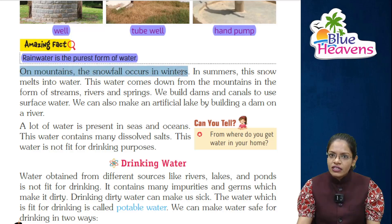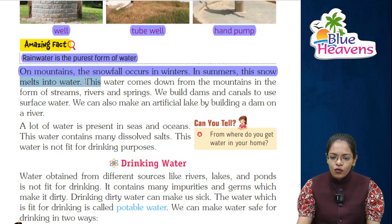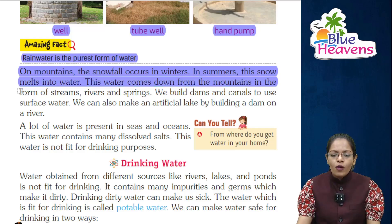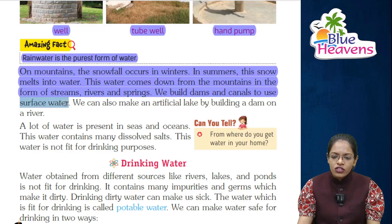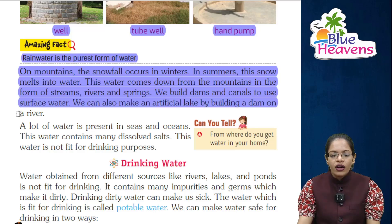On mountains, snowfall occurs in winters. In summers, this snow melts into water. This water comes down from the mountains in the form of streams, rivers, and springs. We build dams and canals to use surface water. We can also make an artificial lake by building a dam on a river.